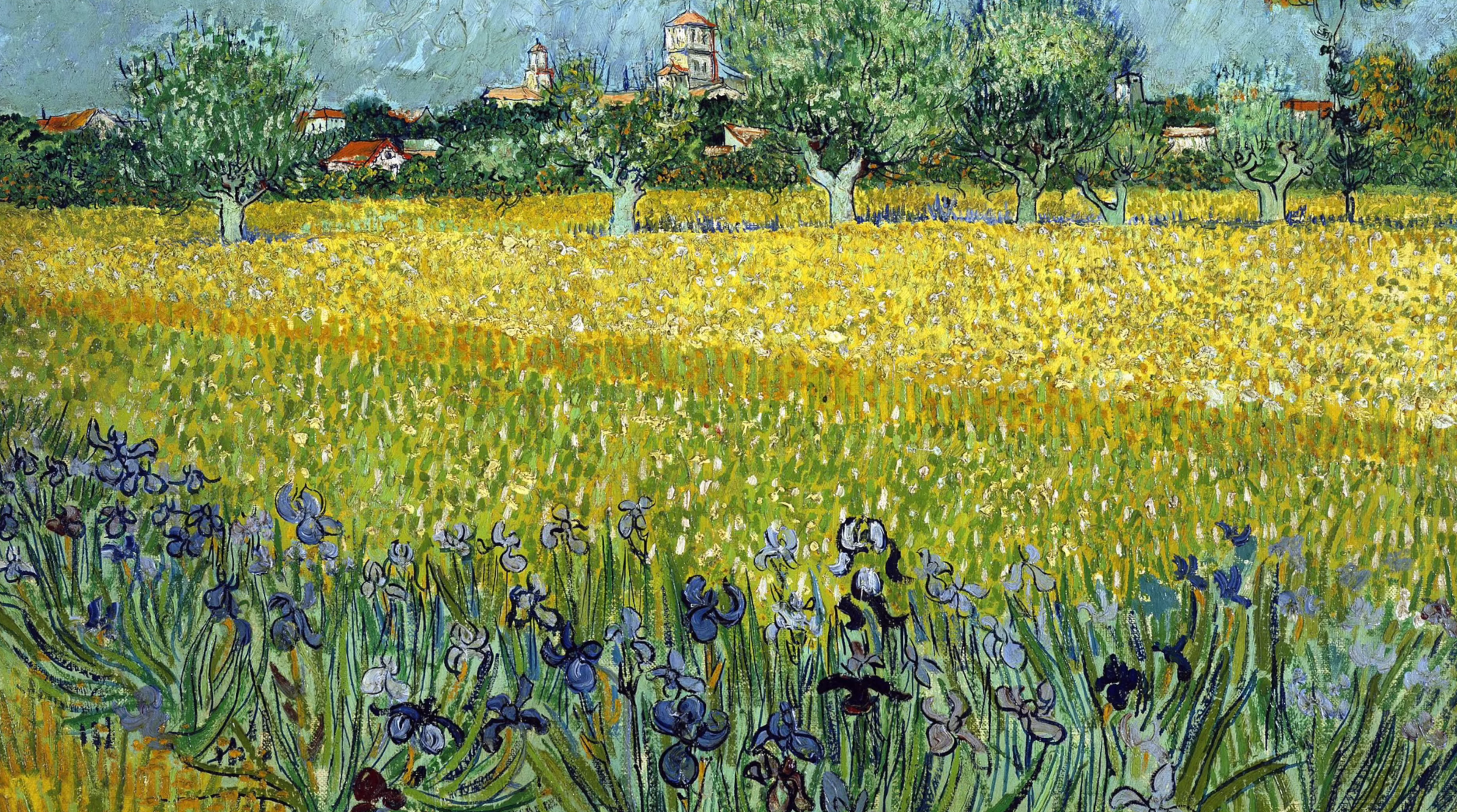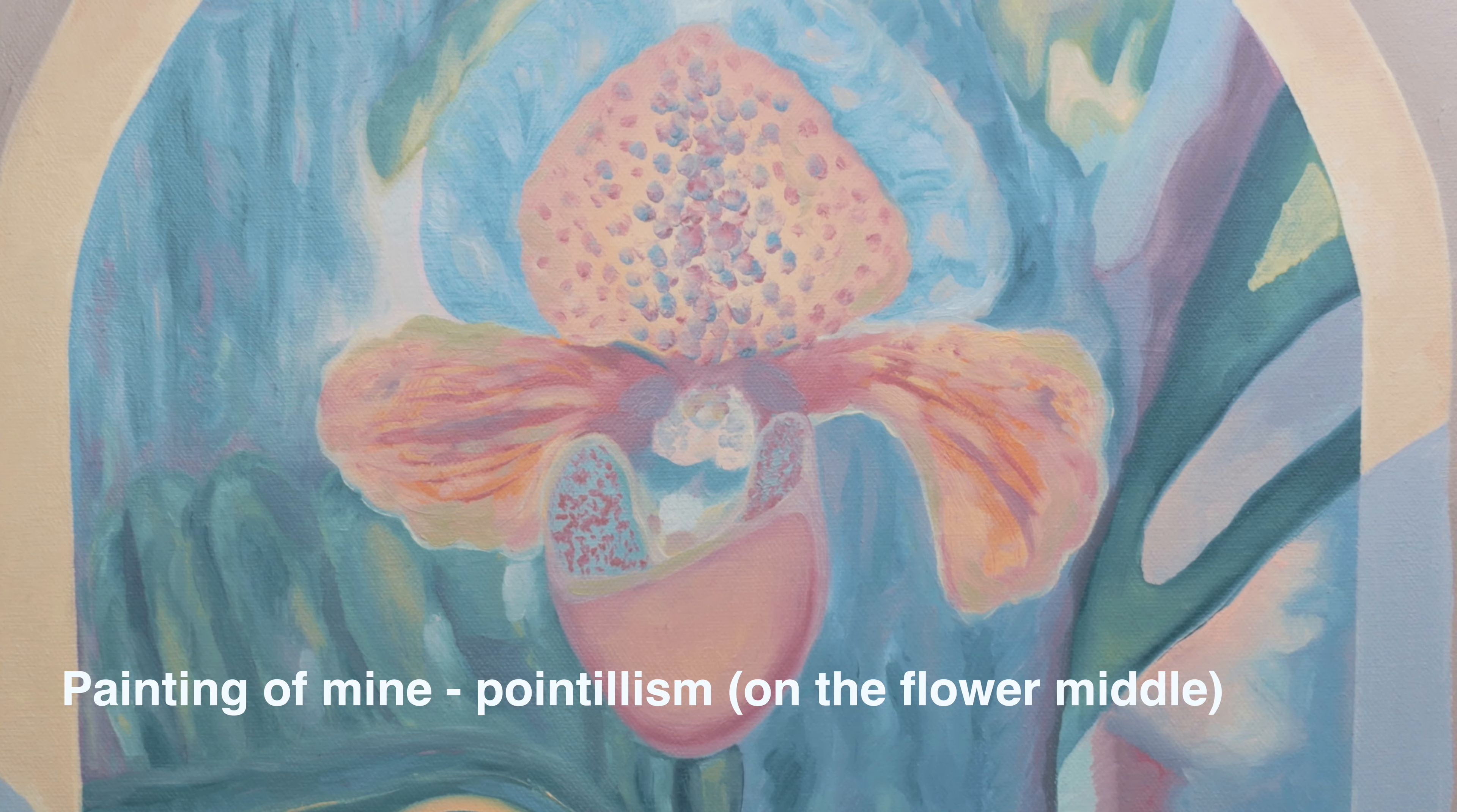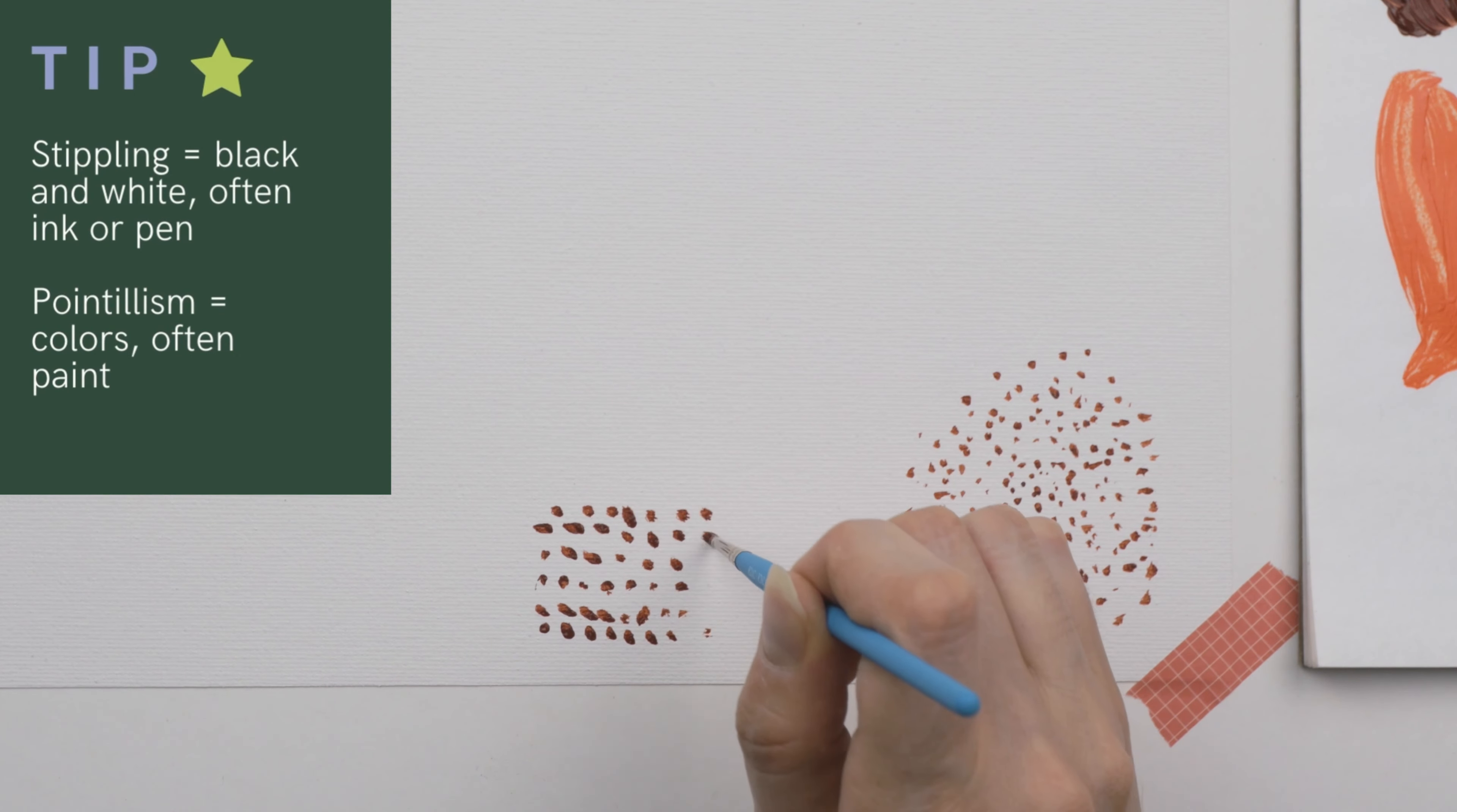Whereas pointillism uses many colors and it's typically done in paint. In this class, I'm only using brown because it's just a quick demo, but in a normal painting, if I was using pointillism, I would have multiple colors. So just remember that stippling is black and white, usually done in pen, and then pointillism is multiple colors, usually done in paint.